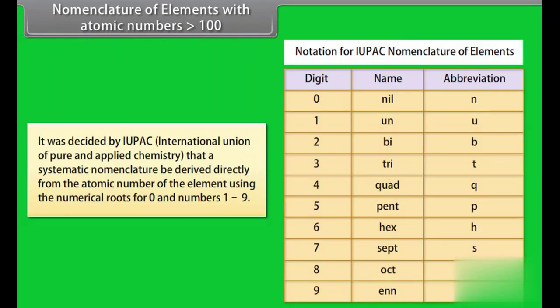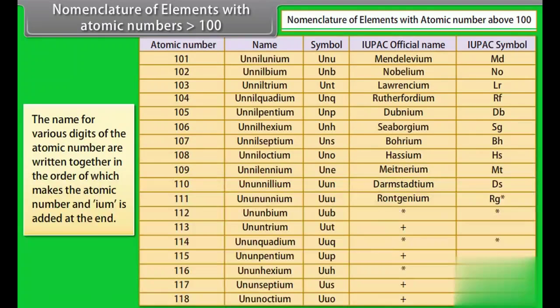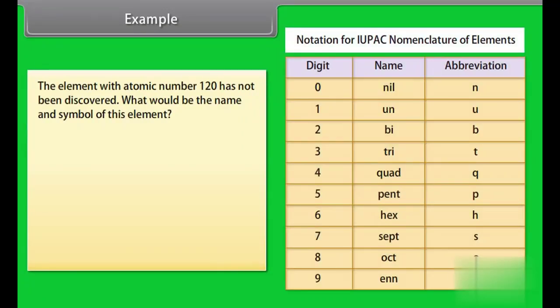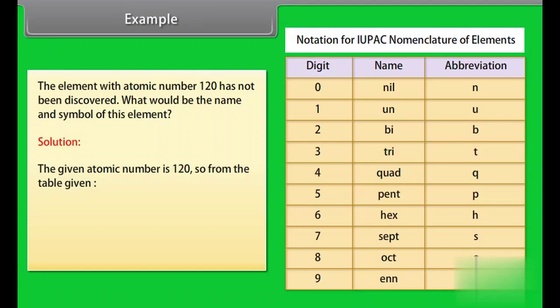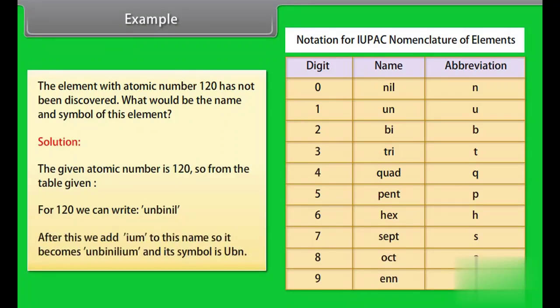Nomenclature of elements with atomic numbers greater than 100: It was decided by IUPAC (International Union of Pure and Applied Chemistry) that a systematic nomenclature be derived directly from the atomic number of the element using numerical roots for 0 and numbers 1 to 9. The name for various digits of the atomic number are written together in order, and 'ium' is added at the end. Example: The element with atomic number 120 — from the table, we write UNBINILIUM, and its symbol is UBN.